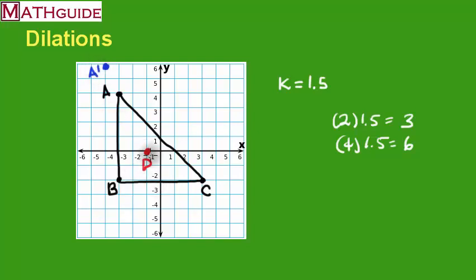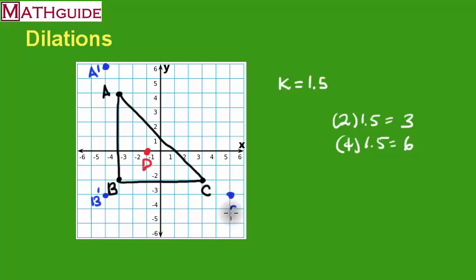Now let's do the same thing with B. To go from D to B, I've got to go two units down and two units left. Two times 1.5 turns out to be three, so I'm going to go three units down and three units left — there's our new B prime. Now for C, I've got to go two units down, which times 1.5 is three, and four units to the right, which times 1.5 is six. So instead of going two down I go three down, and instead of going four to the right I go six to the right. There's our new C prime.